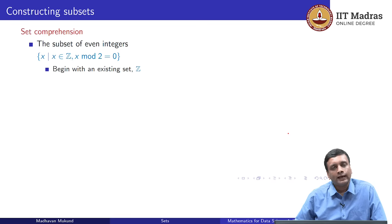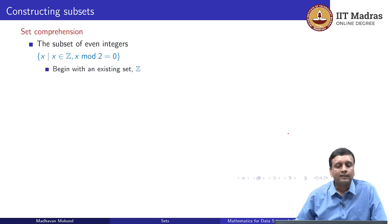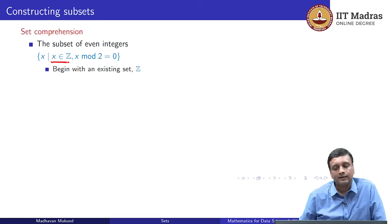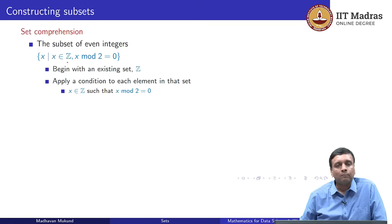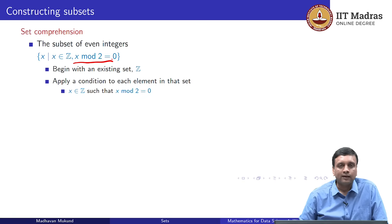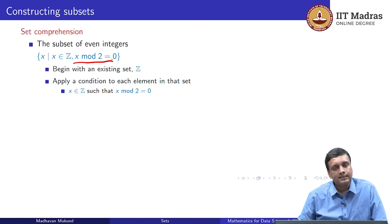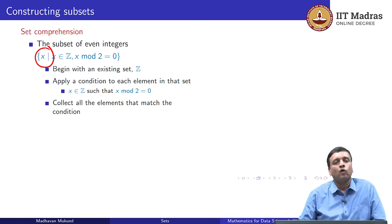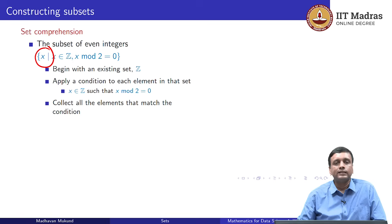When we use set comprehension, we can only do set comprehension when we have a starting set. We begin with a set and construct a subset of that set. The first thing says we want to take all x in Z — we are looking at elements from an existing set, in this case the integers. Then we take all elements and apply some condition to decide whether to keep that number or not. We are saying x in Z such that x mod 2 is 0 — collect together all the x which satisfy this. This notation says collect all x for which x is in Z such that x mod 2 is 0, or in other words x is even. This is set comprehension notation and formally how you define a subset of an infinite set.